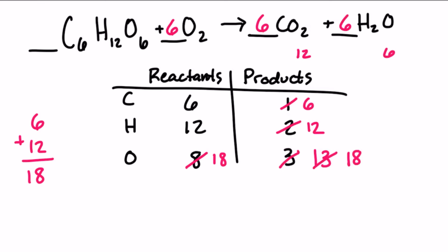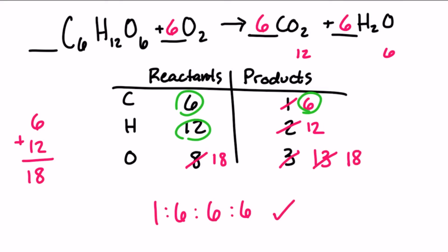Now let's check that our coefficients are reduced. That is reduced — we can't divide it any further. Now let's check our work. We have six carbon in the reactant and the product, 12 hydrogen in the reactant and the product, 18 oxygen in the reactant and the product. And this reaction is balanced.